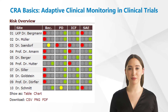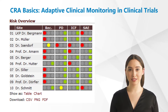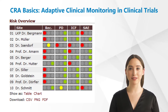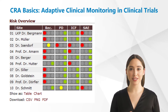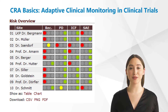You measure the number of predefined risk factors that could have an impact on the quality of the study — the so-called key risk factors or key risk indicators. In this example, these are major protocol deviations.